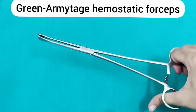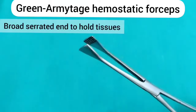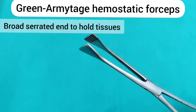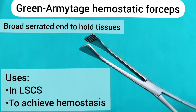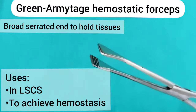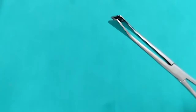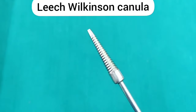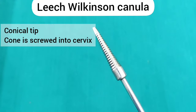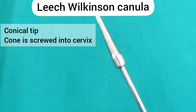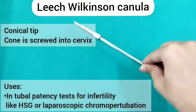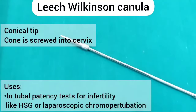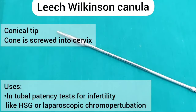Green Armitage haemostatic forceps — it has a broad serrated end to hold the tissues. It is used in lower segment caesarean section operation to achieve haemostasis. Leech Wilkinson cannula — it has a conical tip. The cone is screwed into the cervix. It is used in tubal patency tests for infertility, like hysterosalpingography or laparoscopic chromo perturbation.